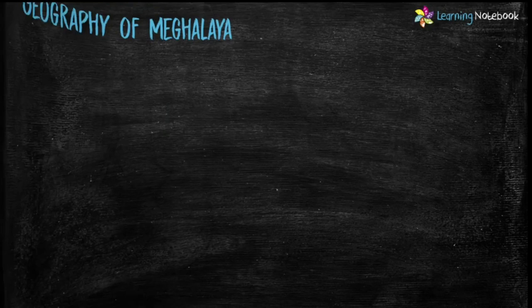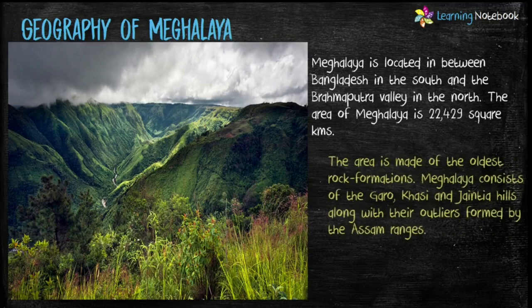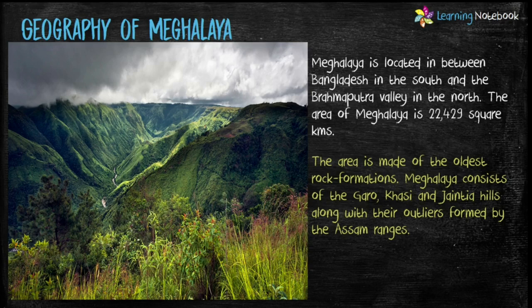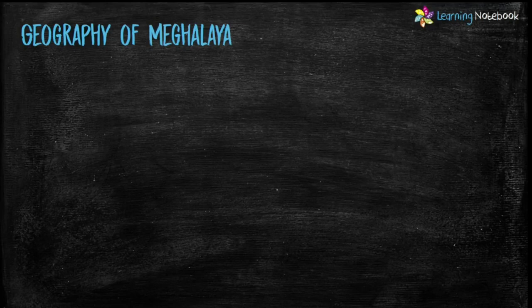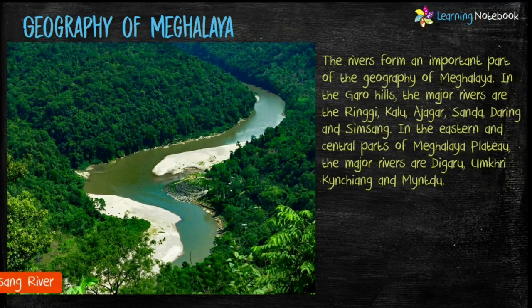Meghalaya attained statehood on 21st January 1972 with a legislative assembly of its own. Now let's see the geography of Meghalaya. The state of Meghalaya is located between Bangladesh in the south and the Brahmaputra Valley in the north. Meghalaya consists of the Garo, Khasi and Jaintia Hills. Meghalaya's plateau elevation varies between 150 meters to 1,965 meters above sea level.